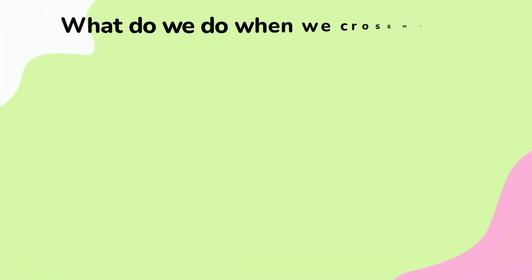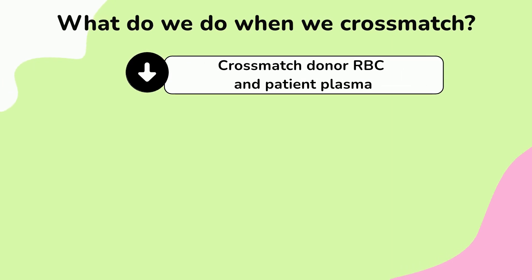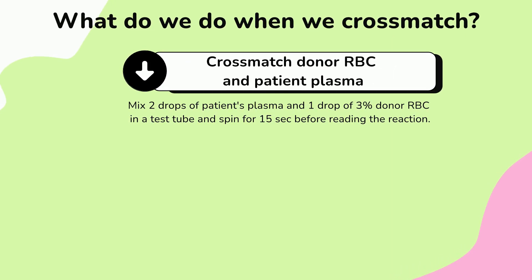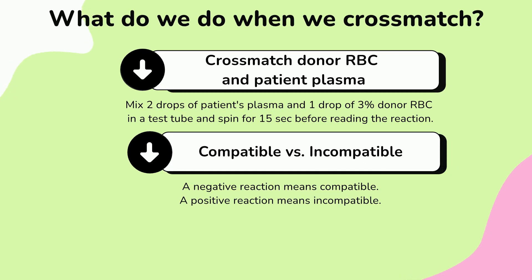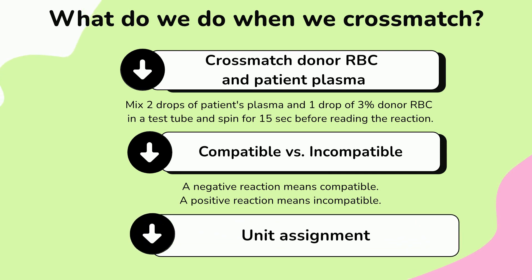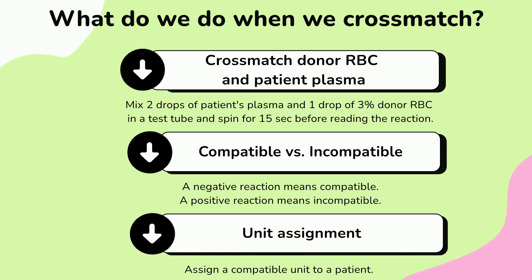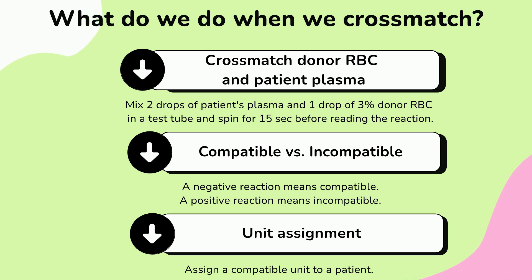What do we do when we crossmatch? We crossmatch donor red blood cells and patient plasma to check for ABO compatibility. If the reaction is zero or non-reactive, that means the unit is compatible and we can assign it to a patient. If the unit is incompatible, we cannot use that unit without further investigations or approval. Incompatible reactions could range from weak to full positive, or even hemolyzed. Hemolysis is also a sign of incompatibility.